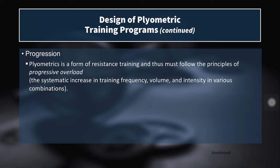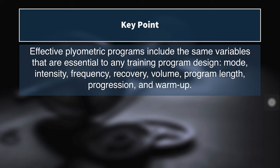For progression, the principle of progressive overload applies — we want to progress the volume, intensity, and complexity of plyometrics as the season advances and as training moves from general to more sport-specific work closer to competition. Throughout an athlete's long-term development, plyometrics should increase overall in intensity, magnitude of forces, volume, and complexity. Effective plyometric programs include the same key variables as any training program: mode, intensity, frequency, recovery, volume, program length, and progression.